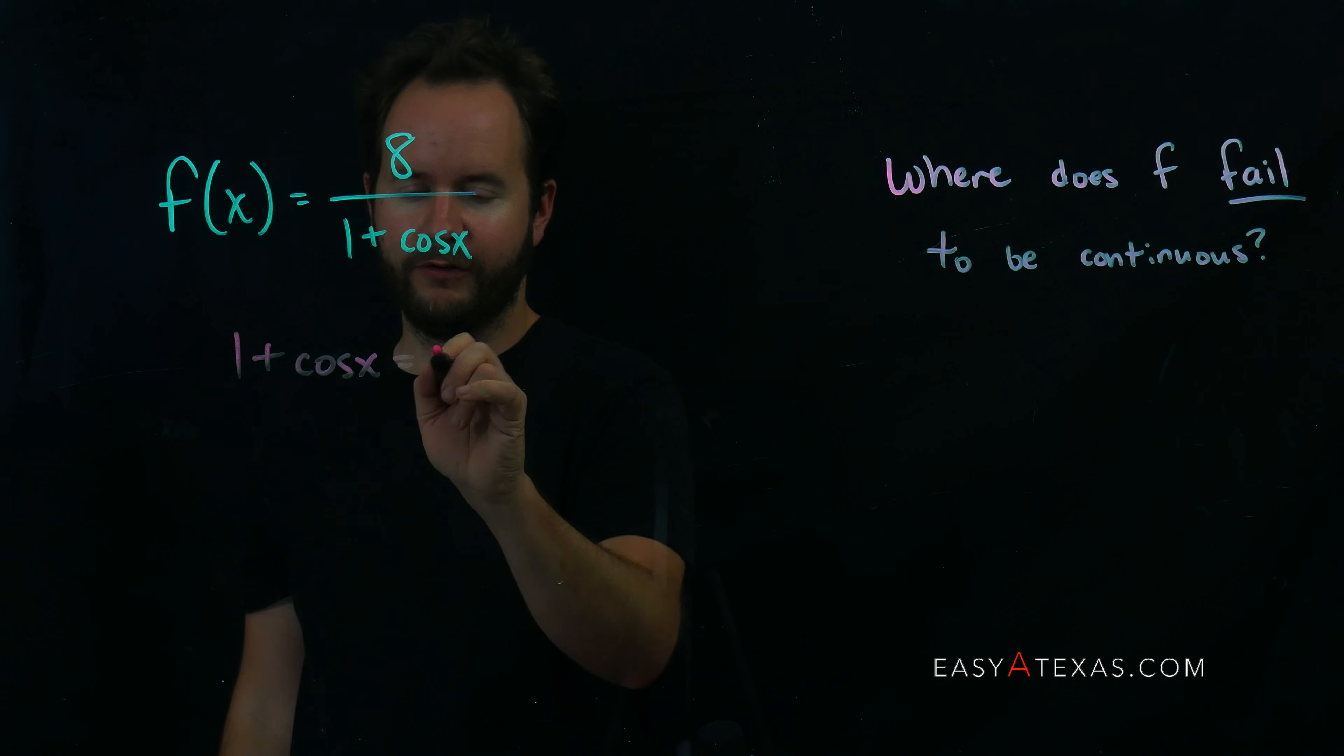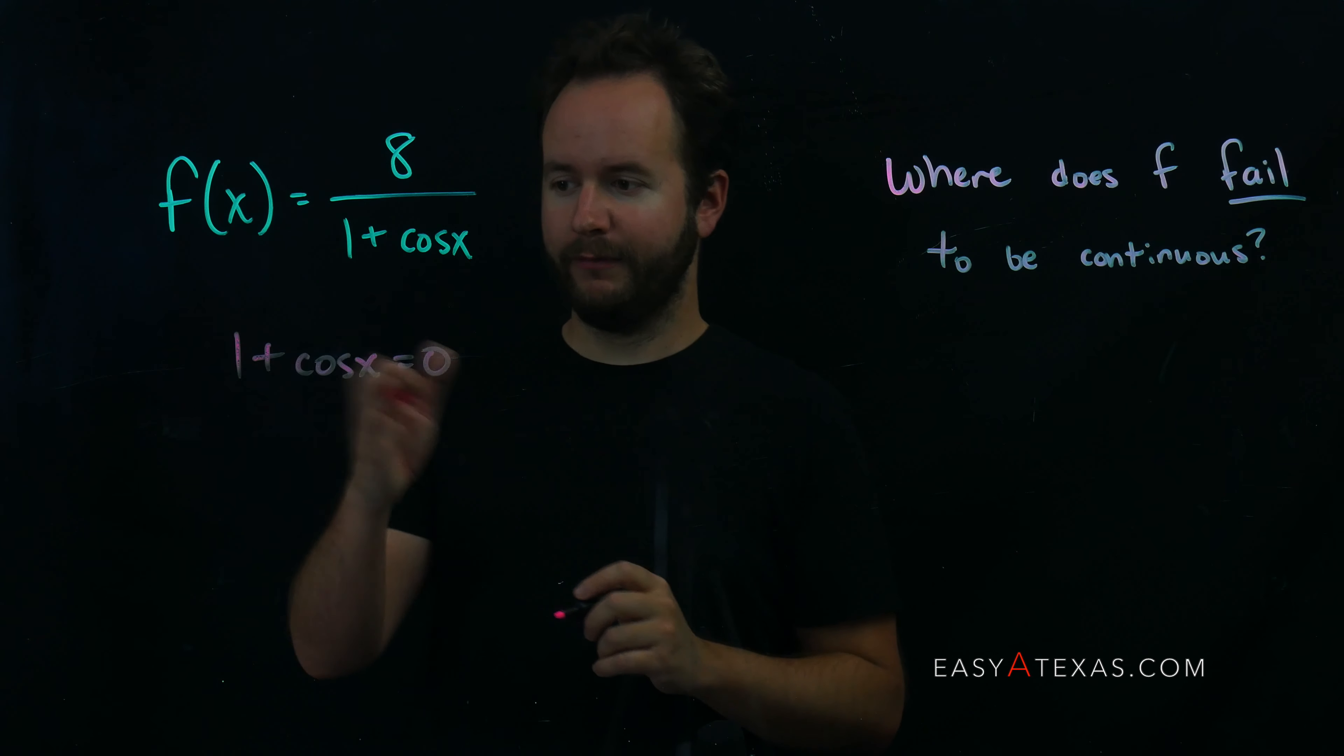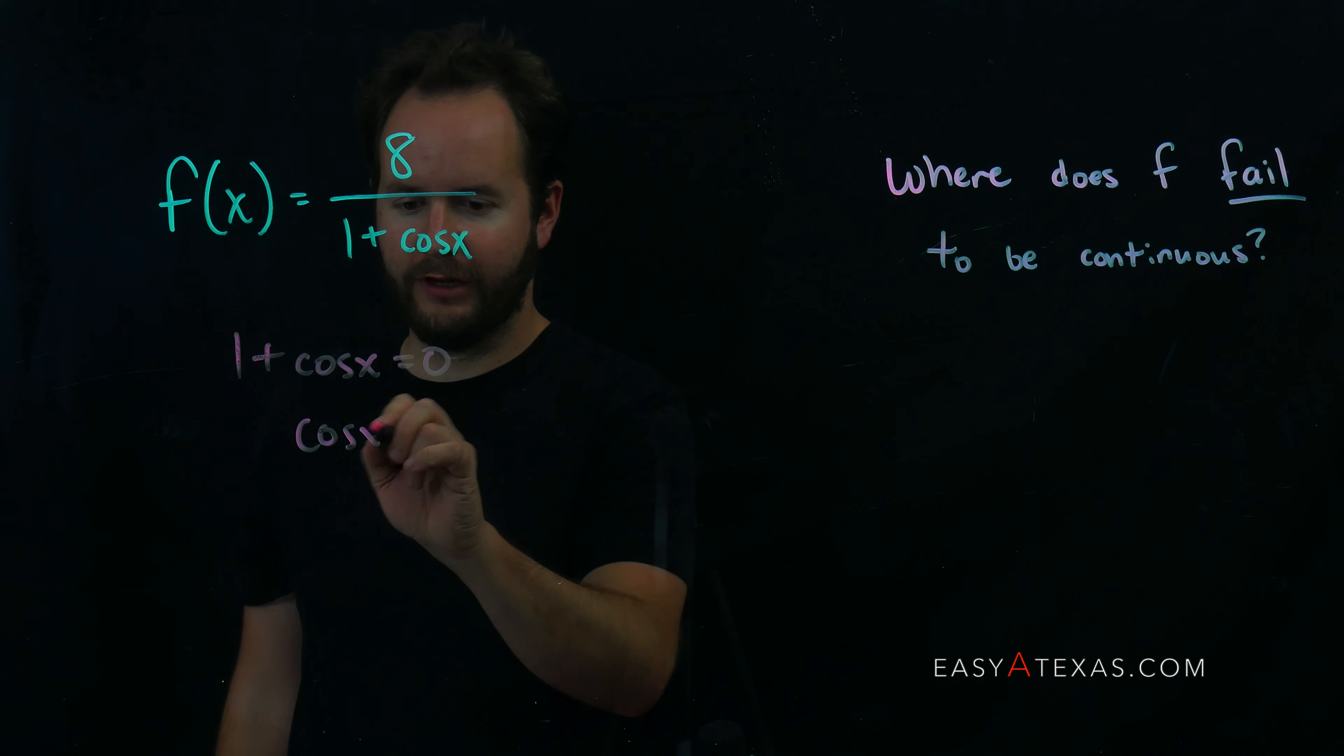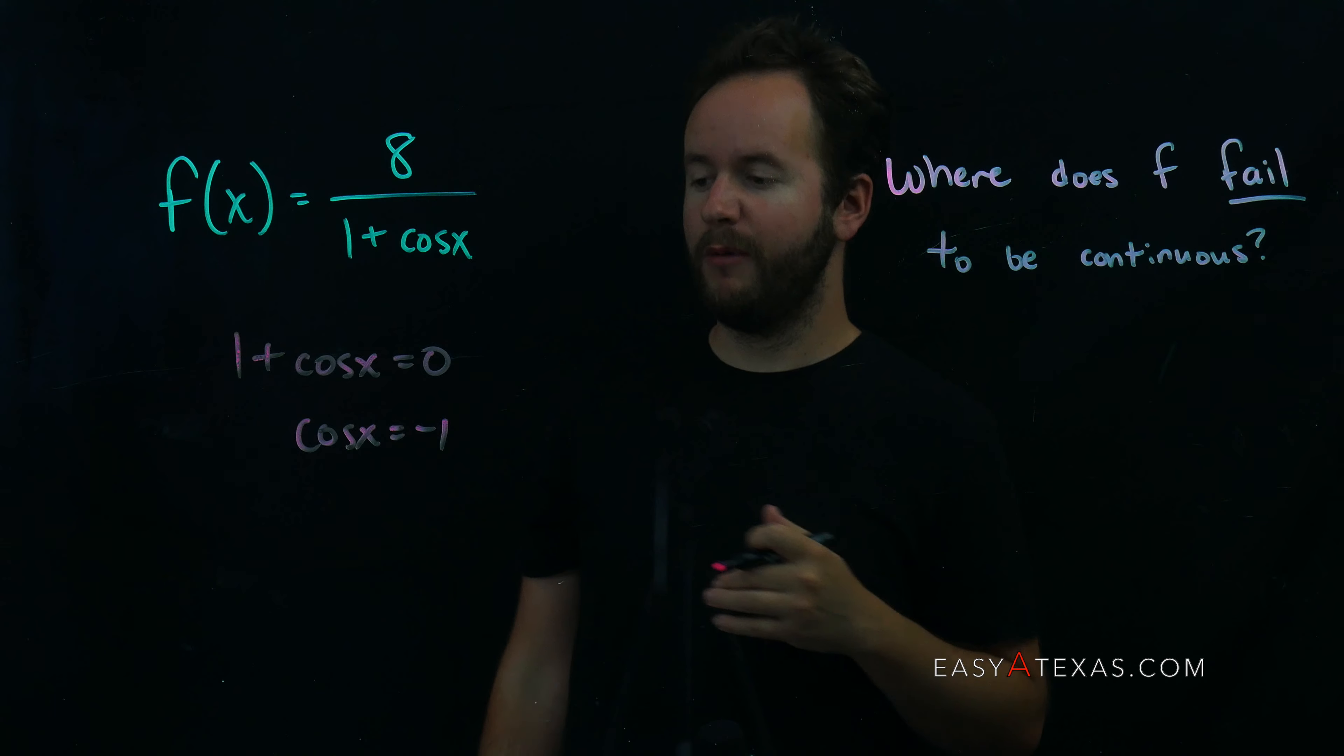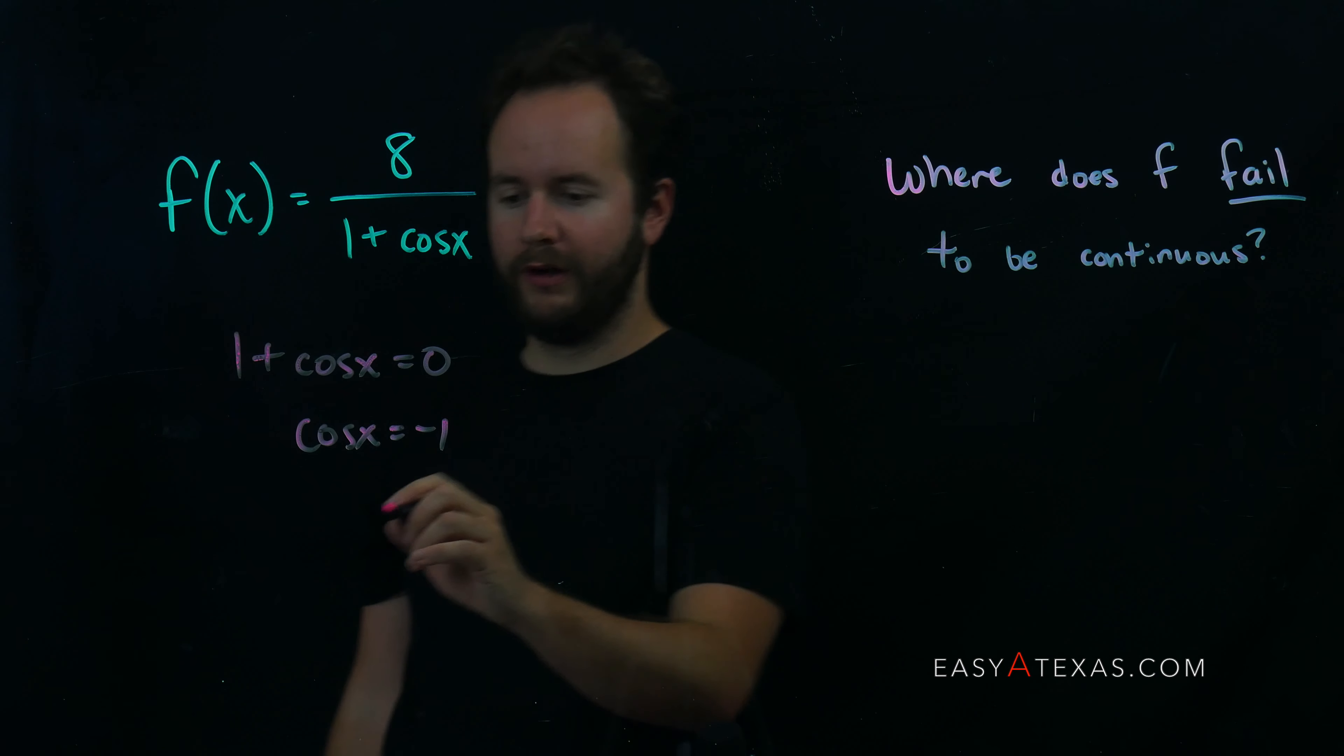I need to figure out where 1 plus cosine of x is equal to 0, which means I'm going to subtract 1 from both sides. I get cosine of x equals negative 1, and then I refresh my memory about my unit circle. Where is cosine of x equal to negative 1?